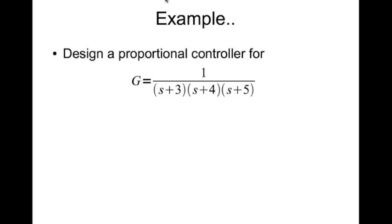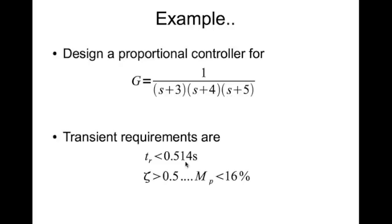Now let's look at an example. We have a plant that is given by 1 divided by (S plus 3) times (S plus 4) times (S plus 5), and we have transient requirements. Rise time is less than 0.514 seconds and the damping constant zeta is greater than 0.5. This corresponds to percentage overshoot less than 16%.